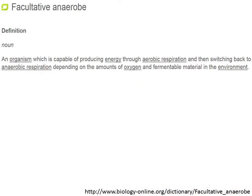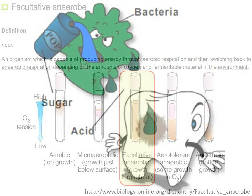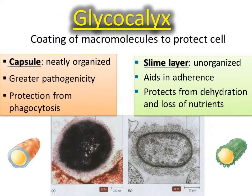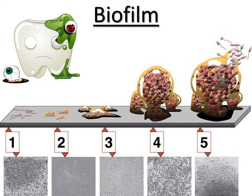As facultative anaerobes, Streptococcus mutans can generate energy either through respiration or through fermentation. When metabolizing carbohydrates through fermentation, Streptococcus mutans produces a lactic acid byproduct that erodes the enamel on the surface of teeth, causing cavities. Another interesting thing about Streptococcus mutans is the loosely organized glycocalyx, known as a slime layer, which helps colonies of bacteria bond together to form a stronger biofilm.